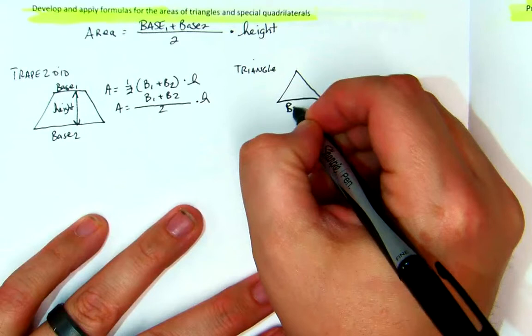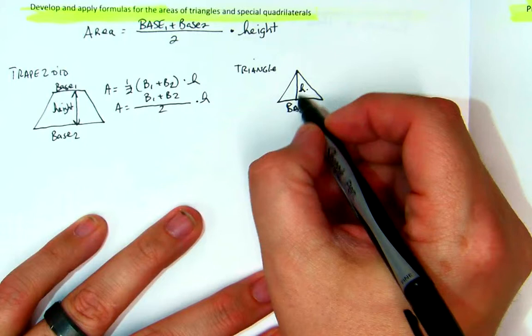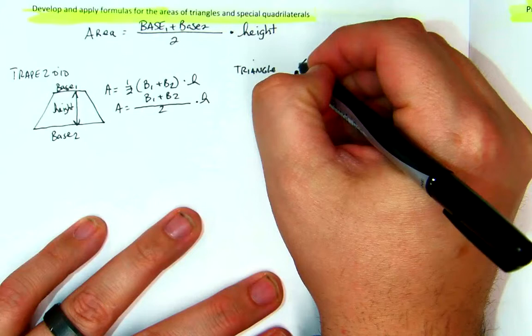Now, this would be considered the base and this would be considered the height. Now, if we take the idea of the trapezoid, that the height is between the two bases, the second base for a triangle, which doesn't really exist because it's not really there, is actually this point right here. So this would be base 2.